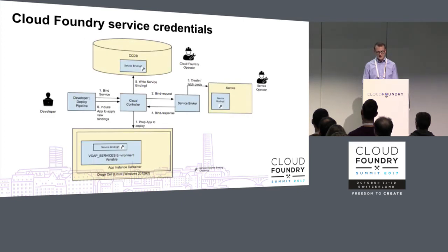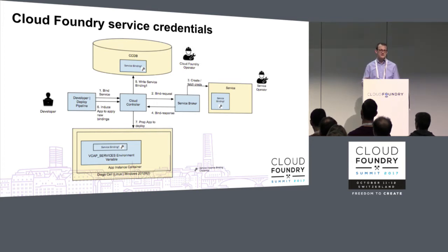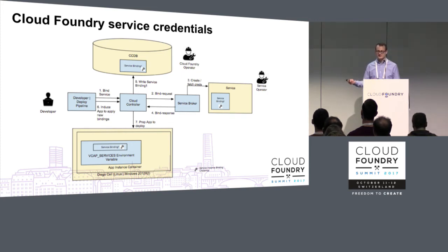This focuses on the use case of service binding credentials. We've received feedback from a number of users that they have concerns about a few different areas of this workflow. The primary one is the way in which credentials are transited between various components of the platform. In the current state diagram, an app developer initiates the bind request and that goes to the service broker, which will go through and provision the service and generate credentials so the application can access it. Once it does that, it passes it back to Cappy, which stores a copy of the credential in its database and then sends that over to Diego, which needs to put it into the application's environment.